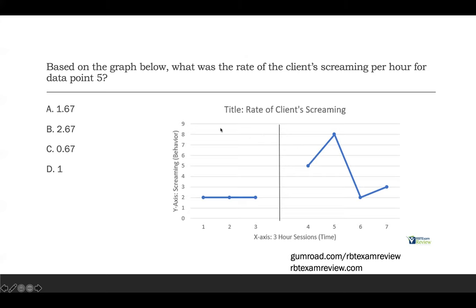Data 0.5 — the behavior happened eight times. We need the rate per hour. If we look at the x-axis, sessions were three hours long. So we know the client screamed eight times during the session and sessions are three hours. If we're looking for the rate per hour, we need to find eight screaming behaviors across three hours. All you're going to do is divide eight — your behavior — by your total time, which is three hours.